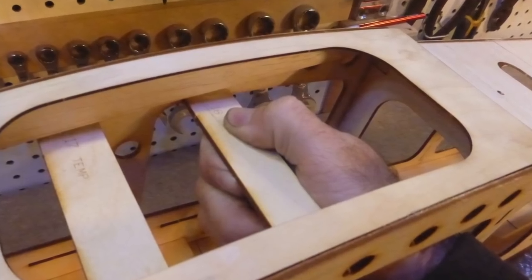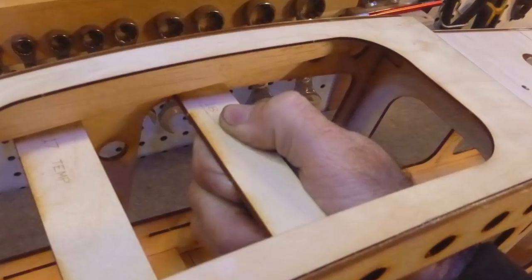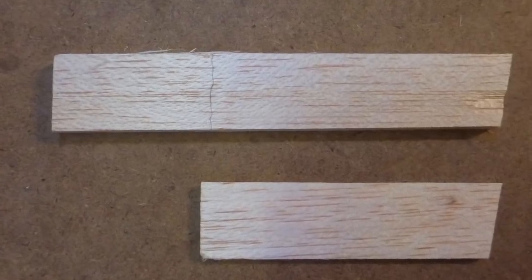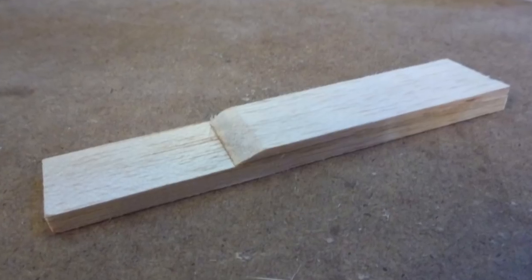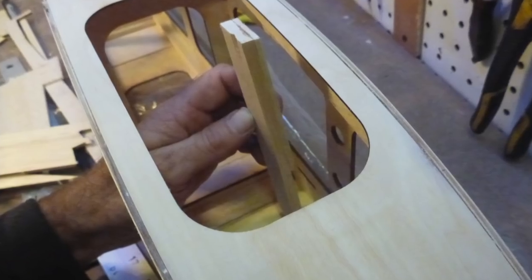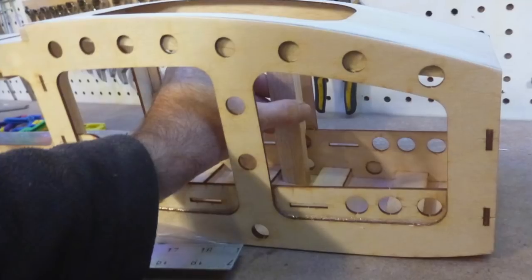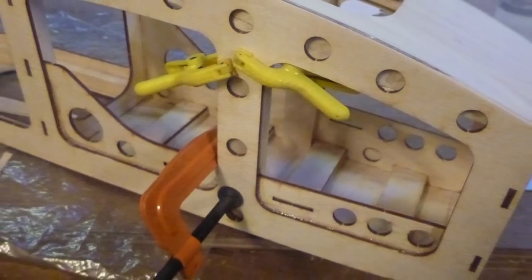You can now remove the temporary spacers. It's optional, but we like to use some scraps from the kit of one-eighth inch balsa to make stiffeners for these sections of the fuselage sides, as they tend to bend inward slightly.